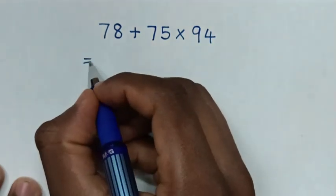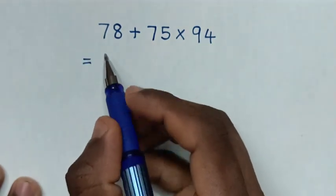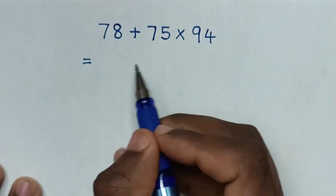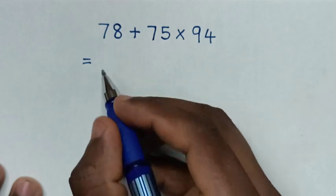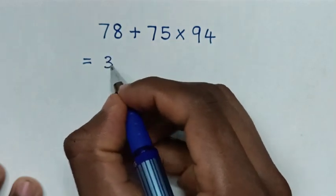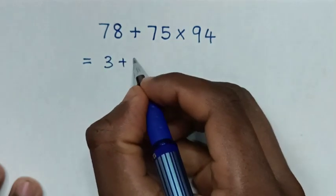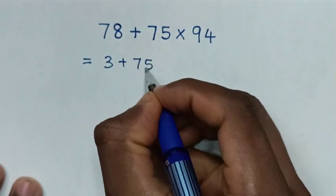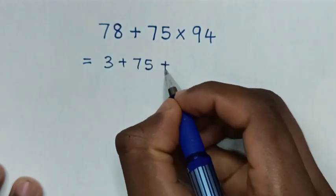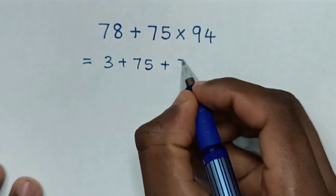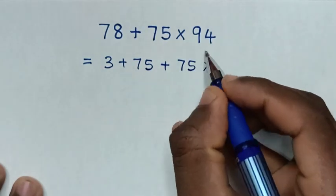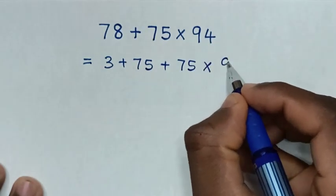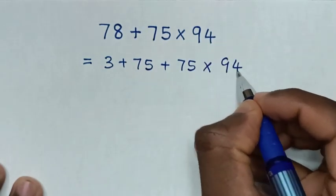So, it will be equal to — for this 78, take 75 as common. 78 is the same as 3 plus 75, then plus this 75, then times 94.